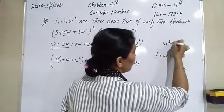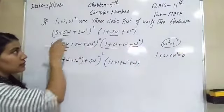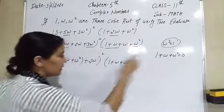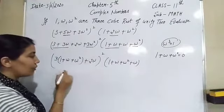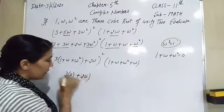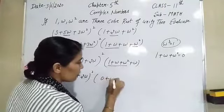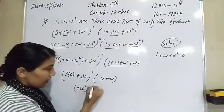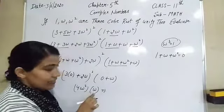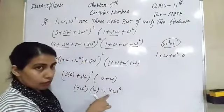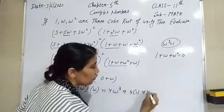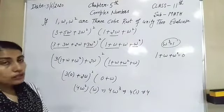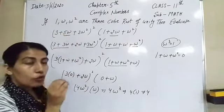So the expression becomes (2ω)² × ω = 4ω² × ω = 4ω³. Since ω³ = 1, the answer is 4.